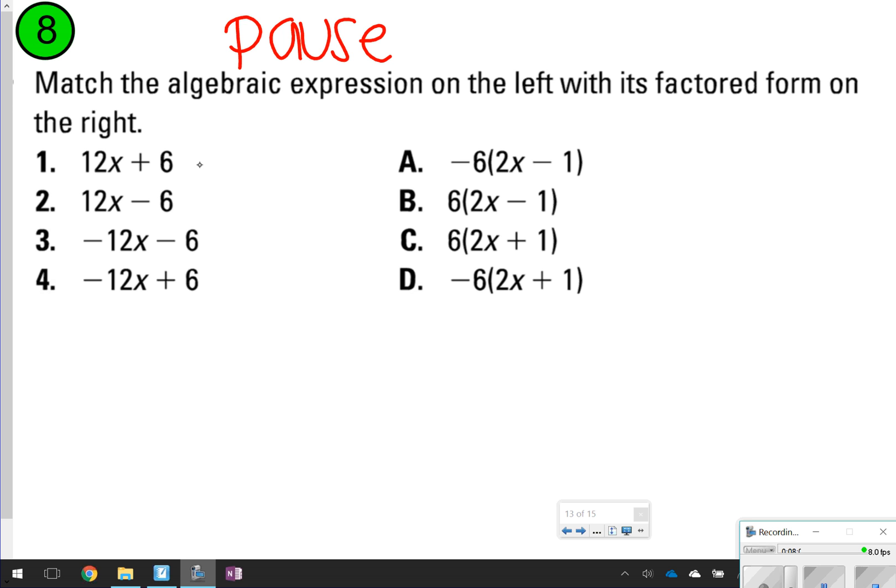All right, so number 1 should be matched with letter C. If you notice, 6 times 2x is 12x, and 6 times 1 is 6. Number 2 should be matched with letter B. 6 times 2x is 12x, and 6 times negative 1 is negative 6. For number 3, it looks like that one is going to match with letter D. Negative 6 times 2x is negative 12x, and negative 6 times 1 is negative 6, which means number 4 is matched with letter A. Negative 6 times 2x is negative 12x. Negative 6 times negative 1 is positive 6.